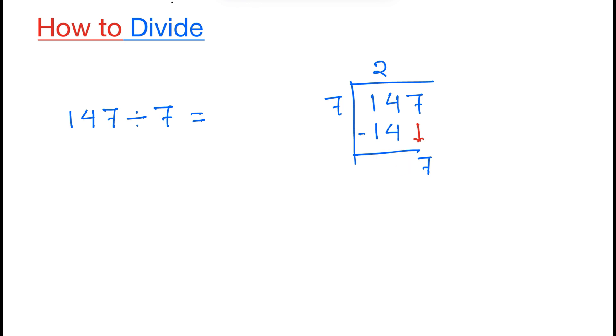And we know that 7 times 1 is 7. Subtract we get 0.